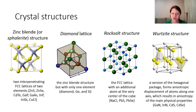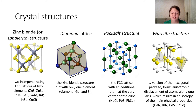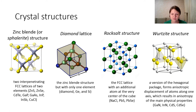Rock salt structure is also a face-centered cubic lattice with an additional atom at the very center of the cube. And also the wurtzite structure — it is a version of the hexagonal package that forms anisotropic displacement of atoms along one axis, usually the C axis shown here in the vertical direction. This results in anisotropy of the main physical properties, namely optical properties. You can also see examples of semiconductors with the corresponding crystal structures.